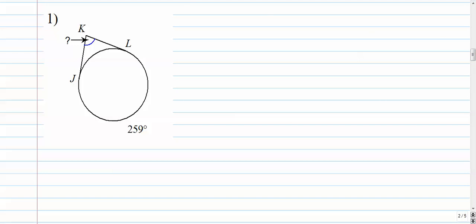Here we go. Number 1. So the angle is equal to the far away arc minus the close arc over 2. The angle is missing. The far away arc is 259. The close arc is missing too. So we have to kind of think about this for a second and say, alright, hold on. We've got that guy right there is totally unknown. Or is it? Well, let's think.